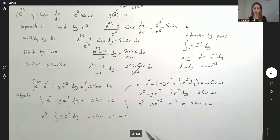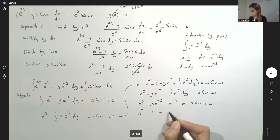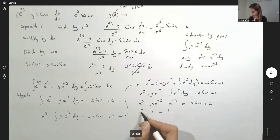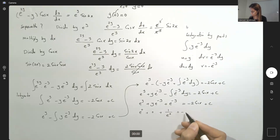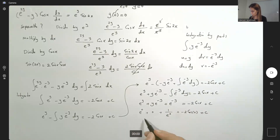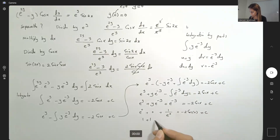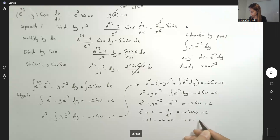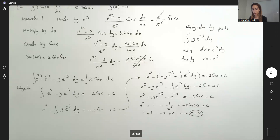It's an initial value problem: where x is zero, y is zero. So e to the power zero, plus zero, plus e to the power zero, equals negative 2 cosine zero plus C. That gives one plus one equals negative 2 plus C, so C equals four.